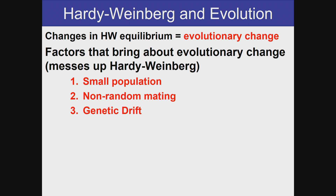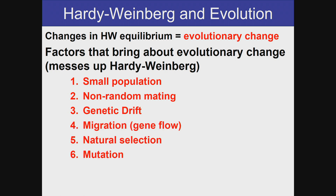The factors that cause evolution include a small population, because if one individual were to change in a small population, that would have an effect on the frequency of alleles in the population. Also: non-random mating, which means individuals may choose a mate for life; genetic drift; migration or gene flow; natural selection; and mutation.